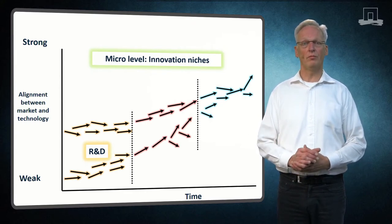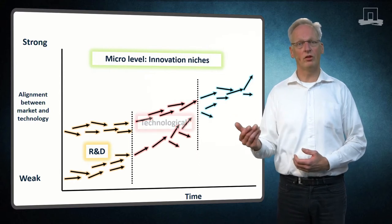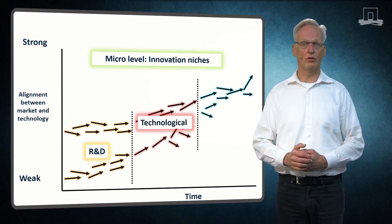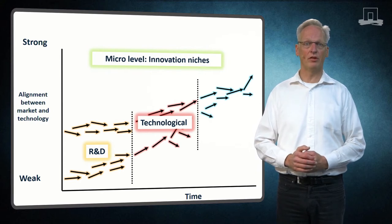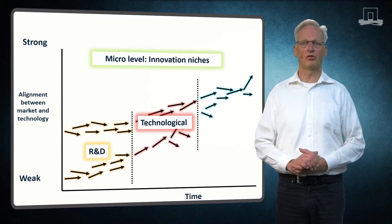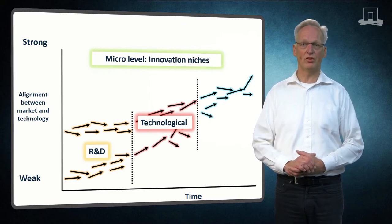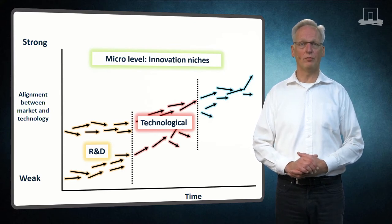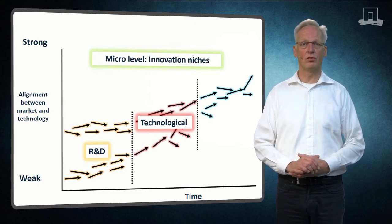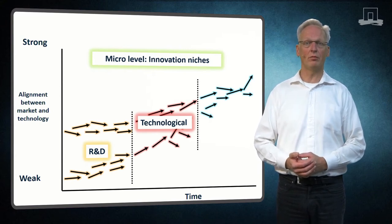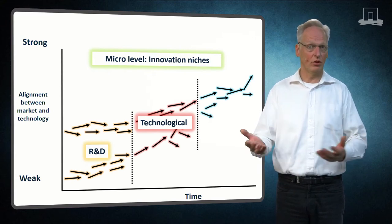Successful R&D niches may develop into technological niches, placed here in the middle. Technological niches are application domains which allow entrepreneurs, firms, and governments to develop inventions which do not yet fit in existing markets. Experiments like pilots and demos may test technological designs, promote the adoption of radical inventions, and enable alignment between market demand and the technological development.